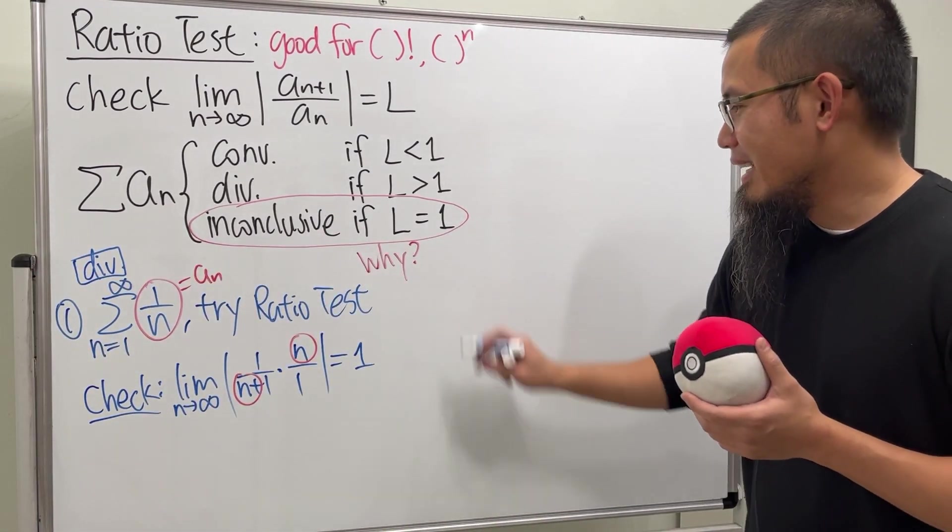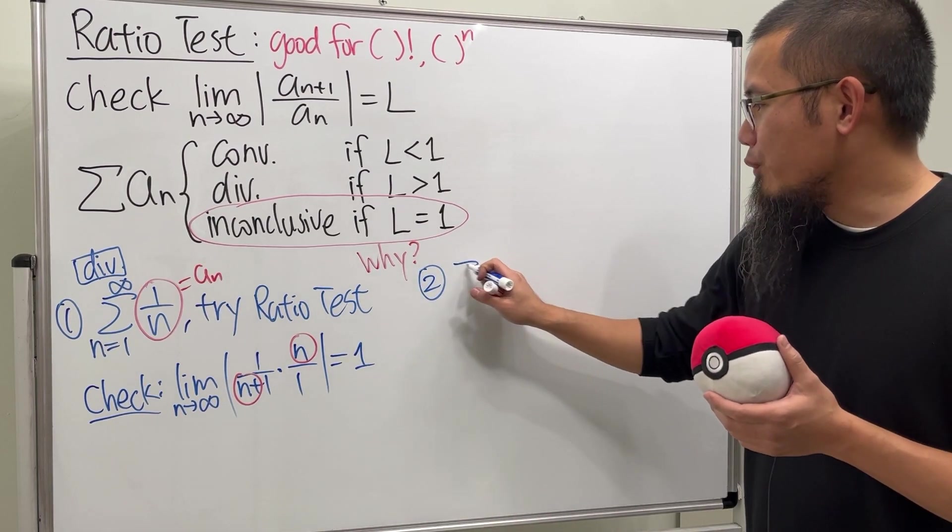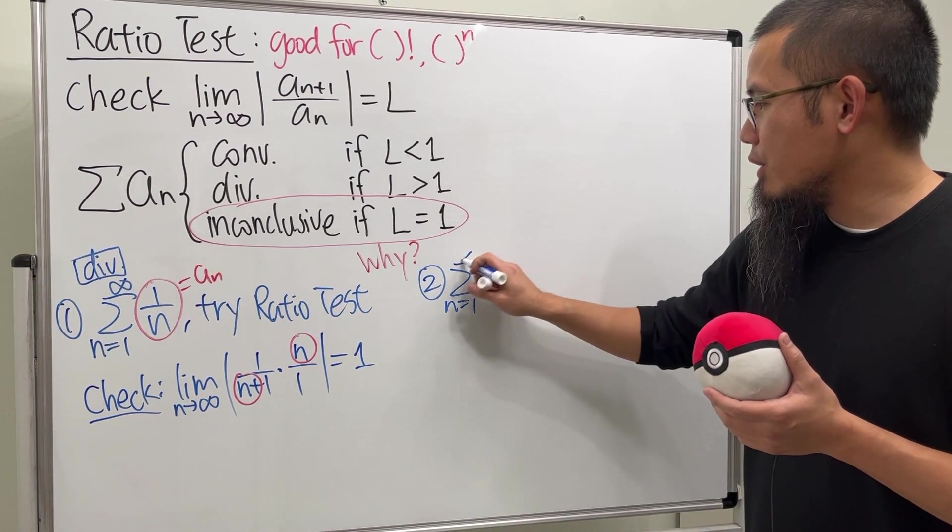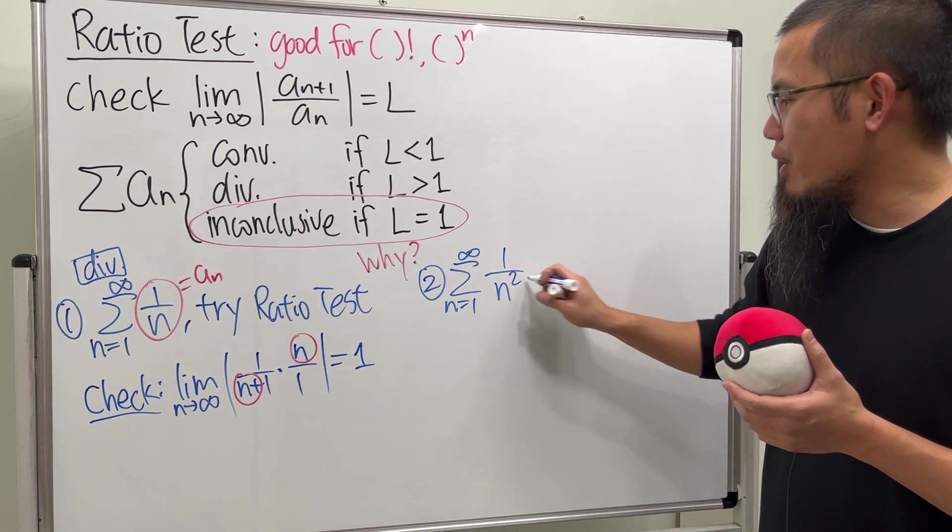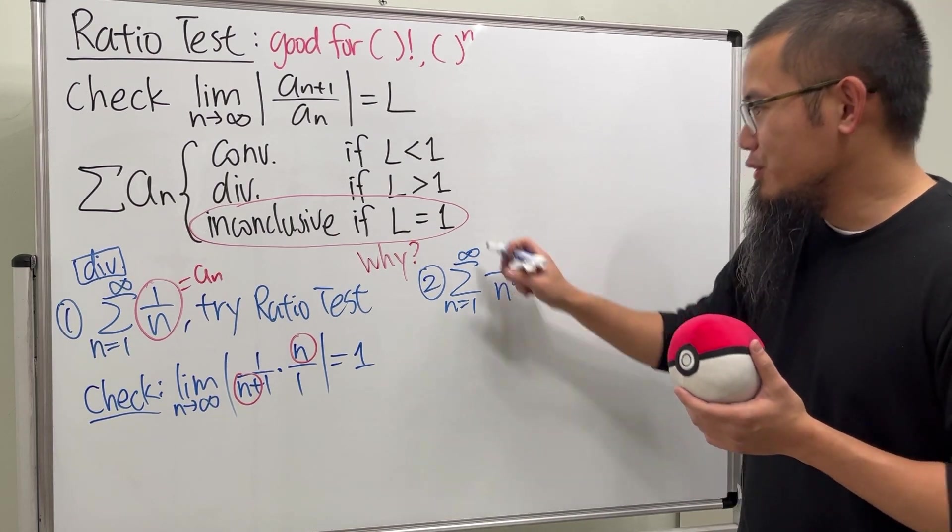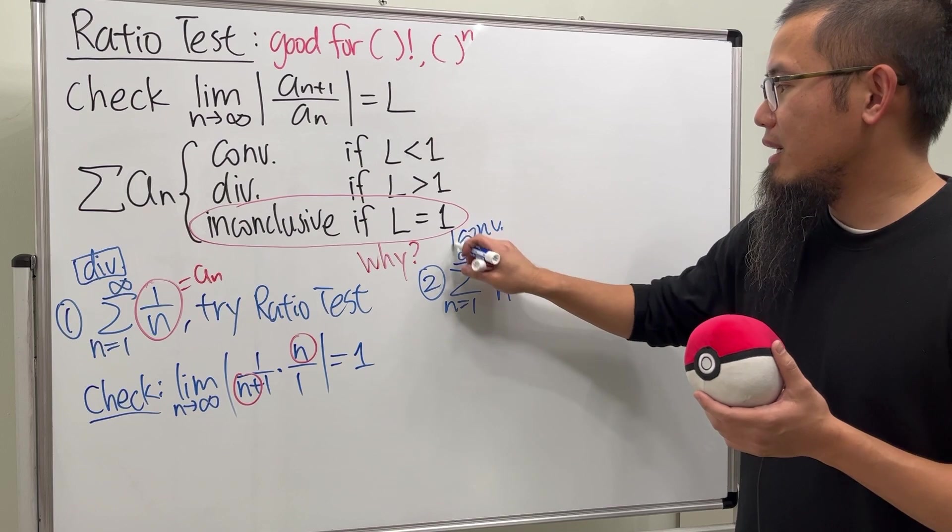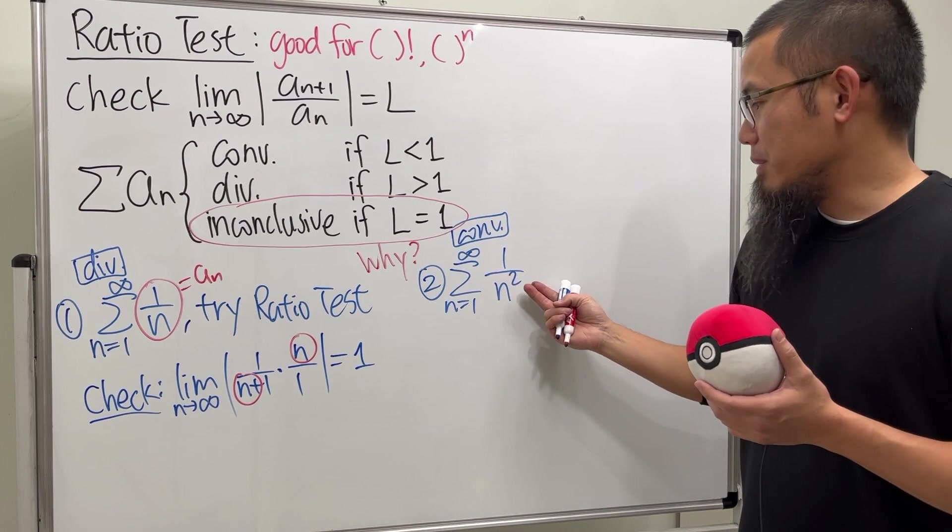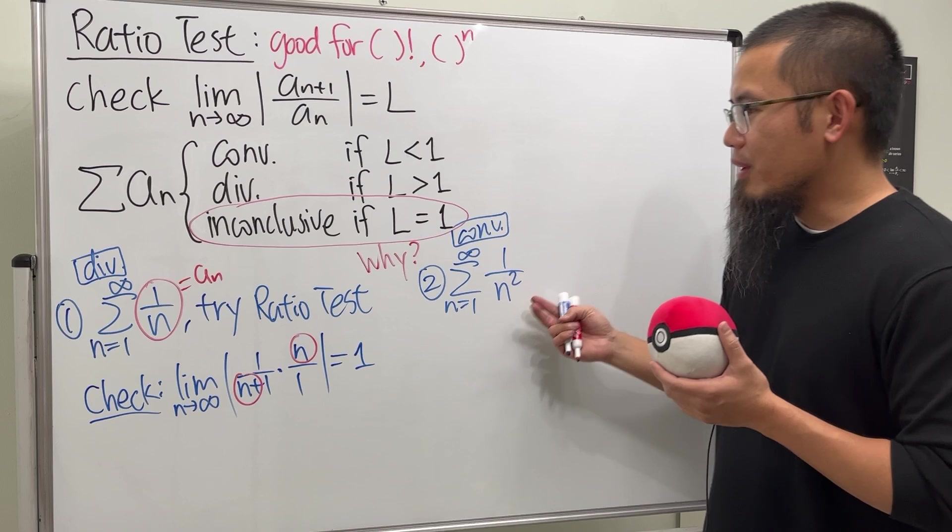However, if you take a look, if we have the series as n goes from one to infinity of one over n squared, this right here converges by the p-series because p is equal to two.